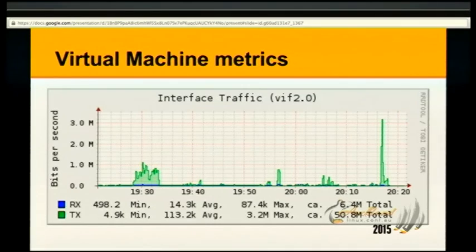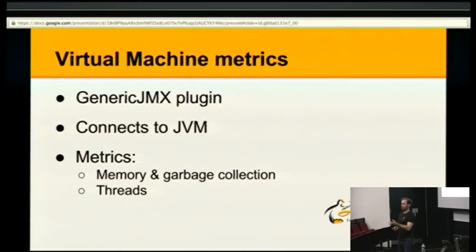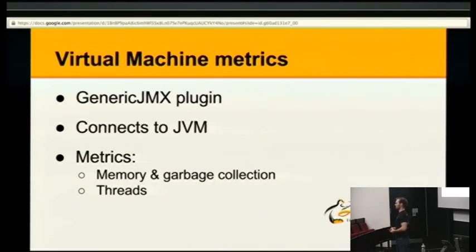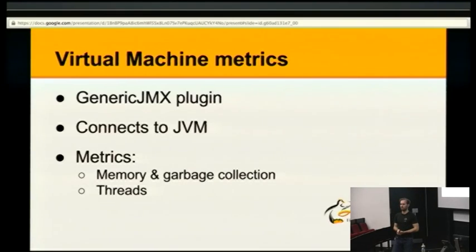On the other end of the cloud spectrum, you might have virtual Java machines scheduled to run somewhere, and you want to get metrics from the JVM. There's a plugin that can help you out with this — the generic JMX plugin. It connects to a running JVM via the Java Management Extensions, JMX, and can query all the MBeans that the JVM provides. MBeans are essentially Java's word for metric. You get memory information, garbage collection information, and thread numbers essentially for free without instrumenting the code at all.